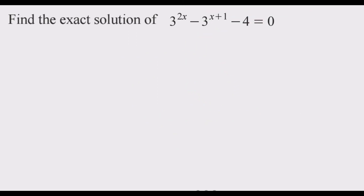Welcome viewers to today's episode. Our question of interest today is to find the exact solution of 3 to the power 2x minus 3 to the power (x+1) minus 4 equals 0. Technically this is the same as solve for x, or find the value of x.